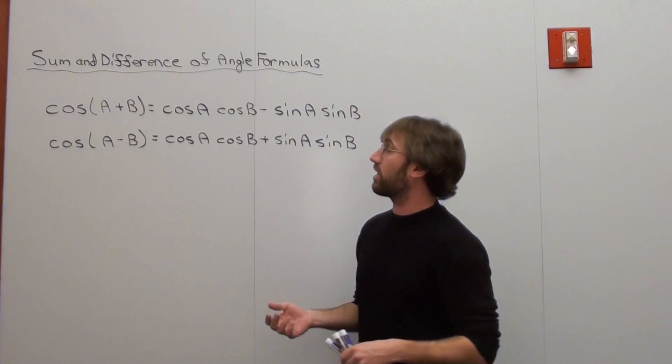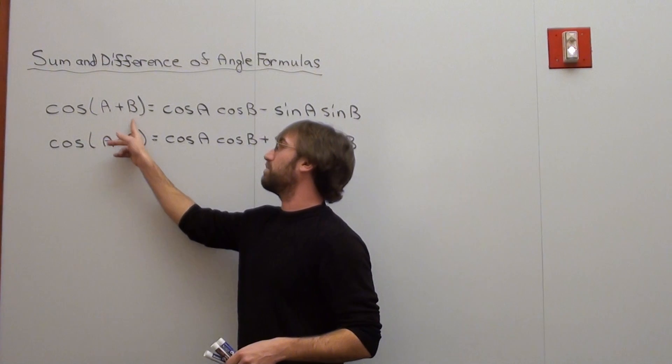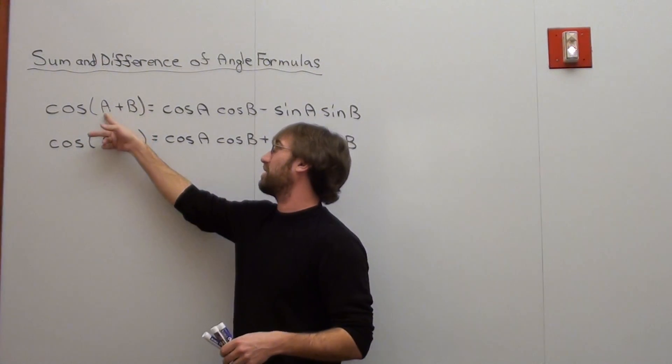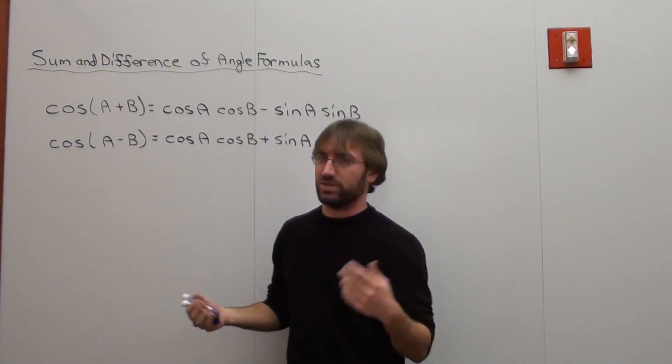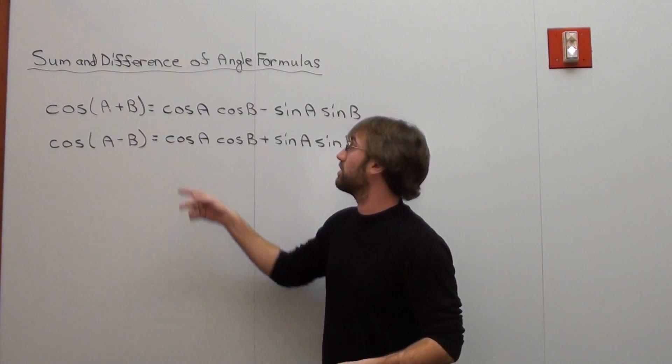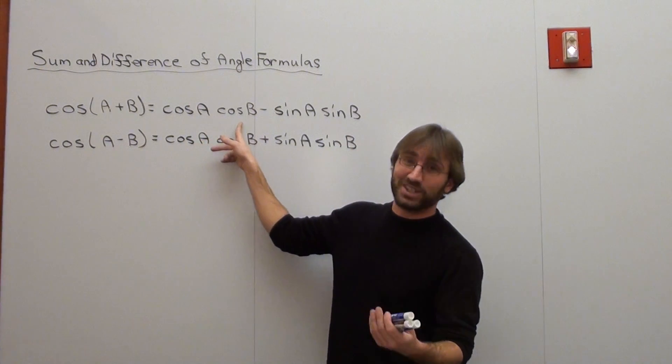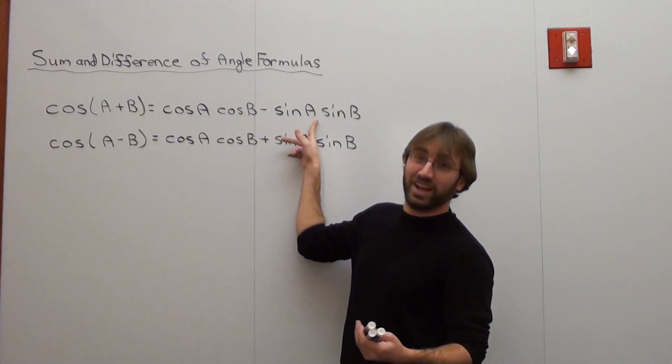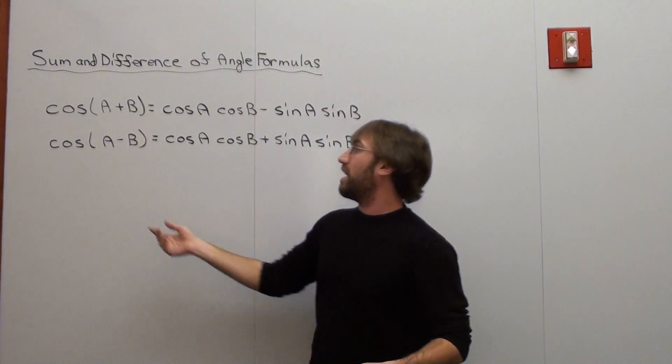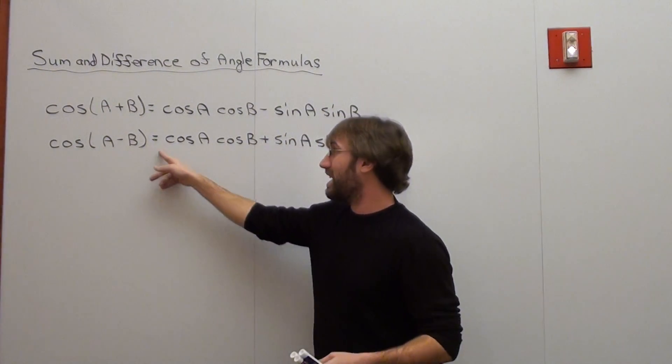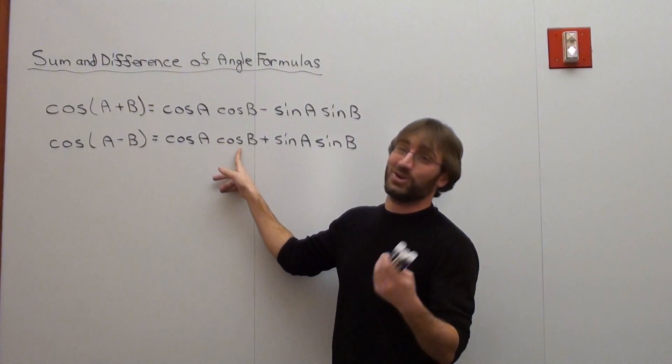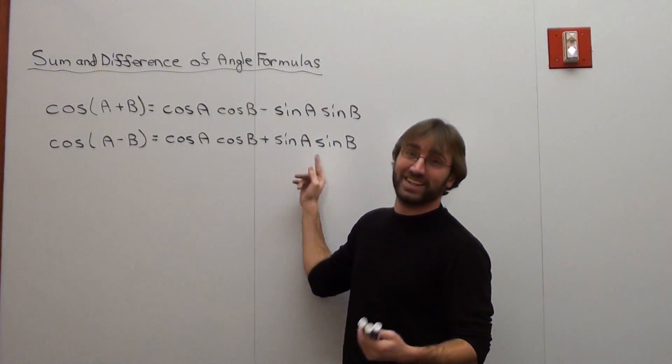So the two formulas that we're working with is this one, cosine of A plus B. And basically A plus B stands for an angle plus another angle. I usually use alpha and beta but that confuses students so I just use A and B. And basically what that's equal to is the cosine of A times the cosine of B subtracted by the sine of A sine of B. And then the difference formula is the cosine of A subtracted by B, where that's equal to the cosine of A cosine of B plus sine of A sine of B.